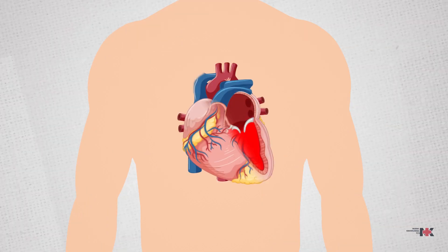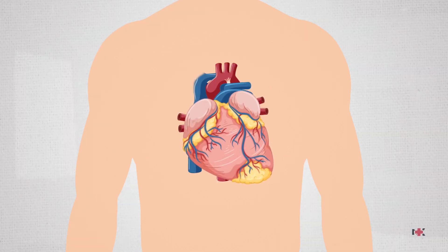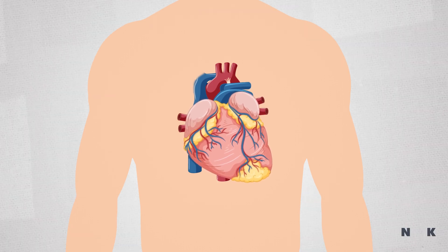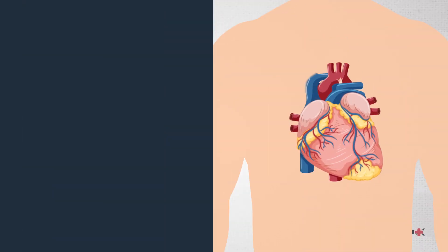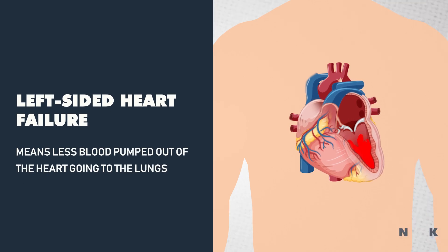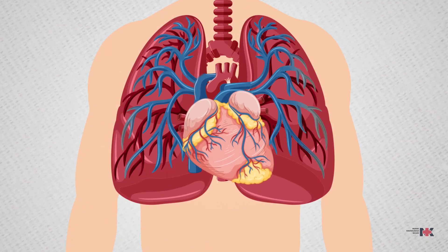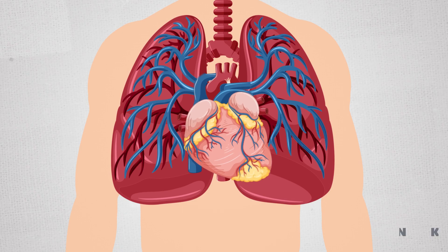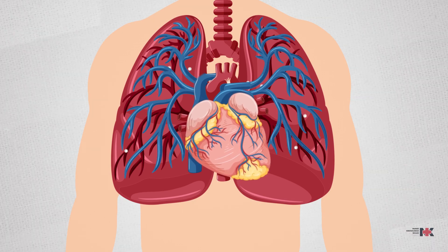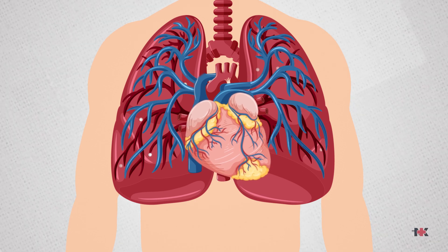Heart failure could also be left-sided or right-sided, depending on which side is affected, and in some cases it could affect both. Regardless of systolic or diastolic, left-sided heart failure means less blood is pumped out of the heart going to the lungs. As a result, blood flow backs up into the lungs and increases pulmonary pressure, then fluid leaks into the lung tissue — which we call pulmonary edema, or fluid in the lungs.